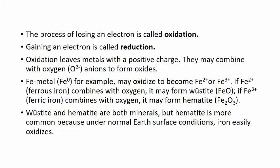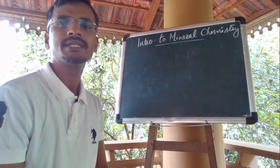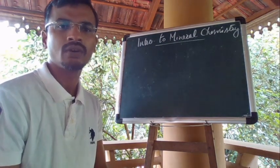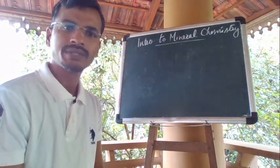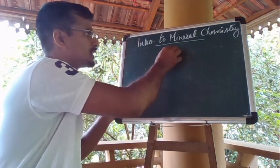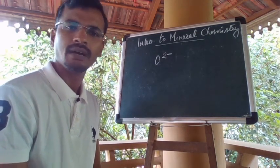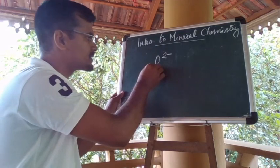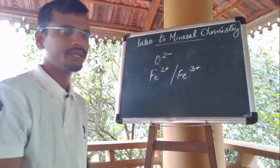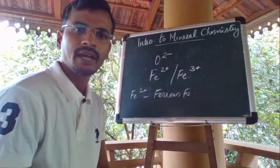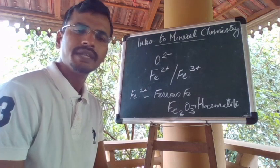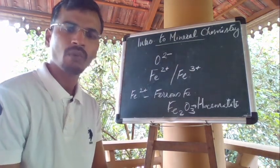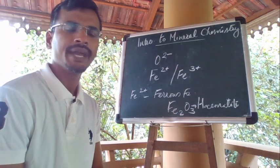The process of losing an electron is called oxidation, and gaining an electron is called reduction. Oxidation leaves a metal with a positive charge; it may combine with oxygen anions to form oxides. Oxygen in its ionic state has a valency of minus two. Iron metal may oxidize to become Fe2+ (ferrous iron) or Fe3+ (ferric iron). Combined with oxygen it may form Fe2O3, which we call hematite. Under normal surface conditions, iron easily oxidizes.